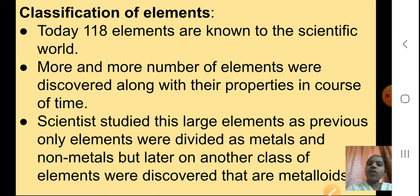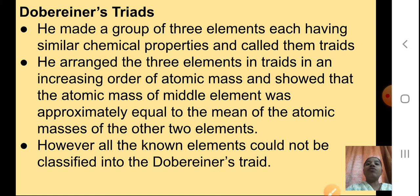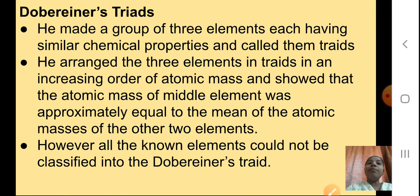What are metalloids? They are showing both the properties of metals as well as non-metals. Now the first scientist we are going to see was Dobereiner. What did Dobereiner say? He gave the triads — he made a group of three elements, each having similar chemical properties, and called them triads.